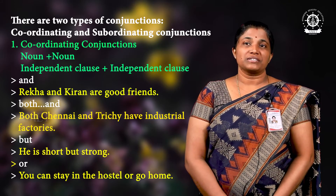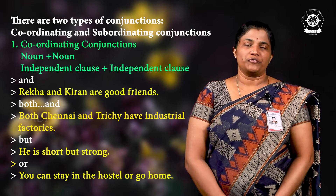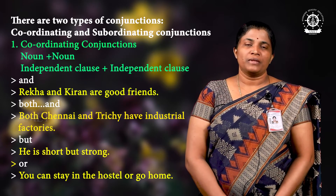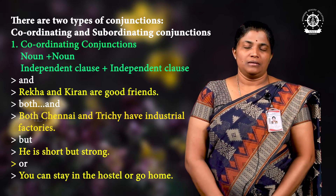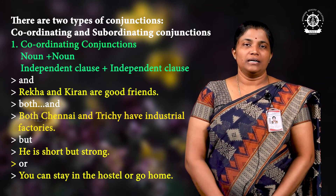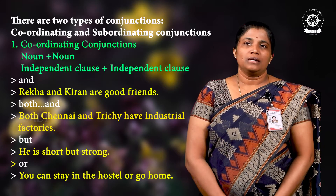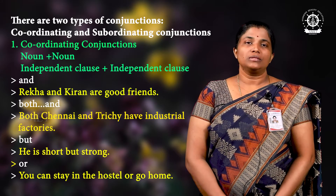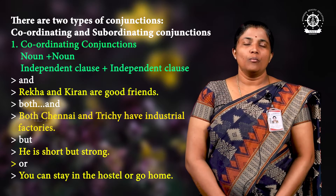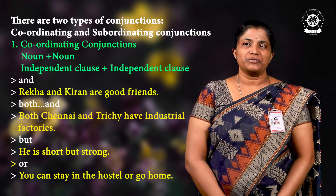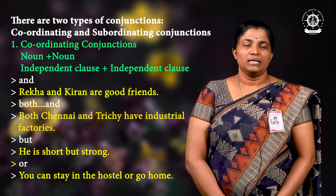For example, the conjunction 'and': Reka and Kiran are good friends. The conjunction 'and' connects Reka and Kiran. Another coordinating conjunction is 'both...and': Both Chennai and Ruchi have industrial factories.